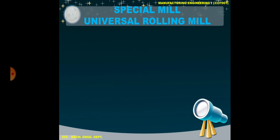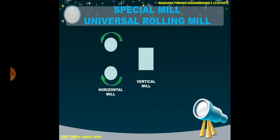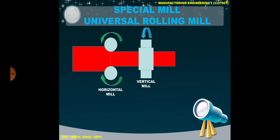The next one is the special milling or universal rolling mill. It consists of a horizontal mill rotating in opposite directions and a vertical mill. The workpiece is first passed between the horizontal mill to reduce its thickness, and then it goes to the vertical mill for further processing. It produces H and I section beams, flats, and plates, with a combination of horizontal and vertical mills working together on different shapes. Therefore it is called a special type mill.